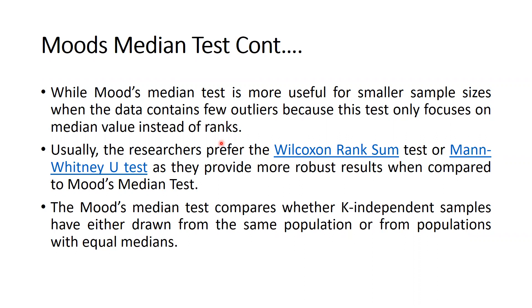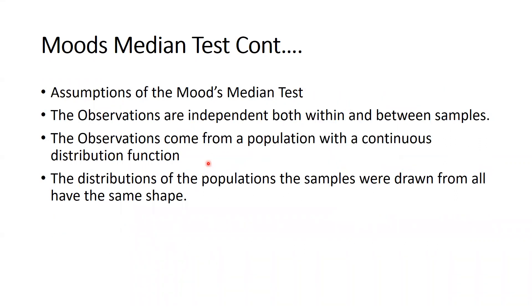Now we come to the assumptions of Mood's Median Test. The observations are independent, both within and between samples. The observations come from populations with a continuous distribution function. And the distributions of the populations from which the samples were drawn all have the same shape.